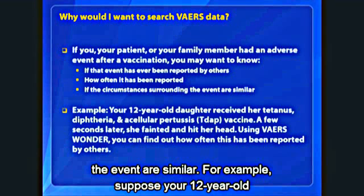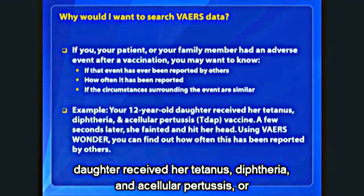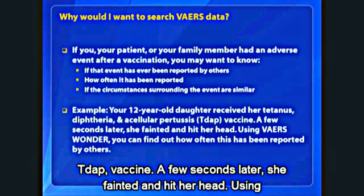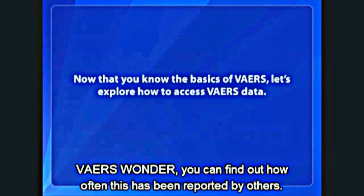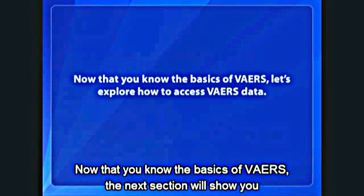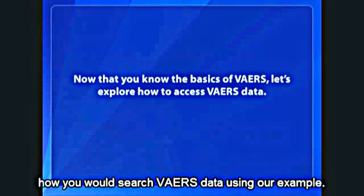For example, suppose your 12-year-old daughter received her tetanus, diphtheria, and acellular pertussis, or Tdap, vaccine. A few seconds later, she fainted and hit her head. Using VAERS Wonder, you can find out how often this has been reported by others. Now that you know the basics of VAERS, the next section will show you how you would search VAERS data using our example.